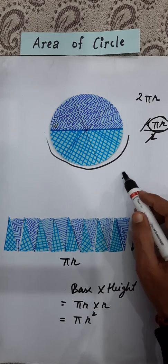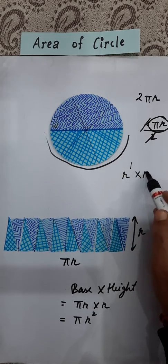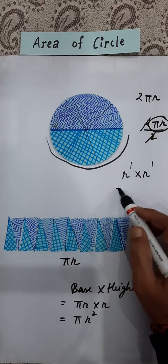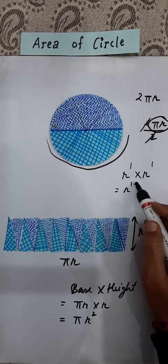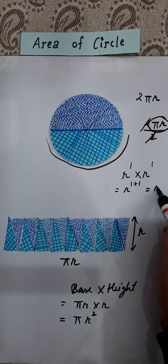And here, if there is nothing, it means 1 is there. So thus it becomes r to the power 1 plus 1, which means r².